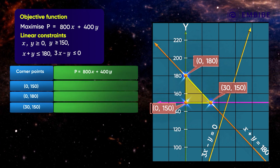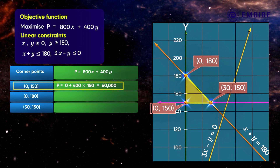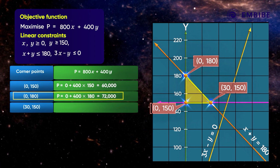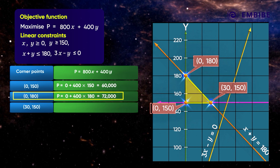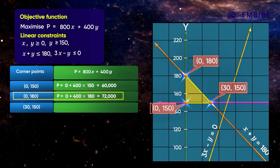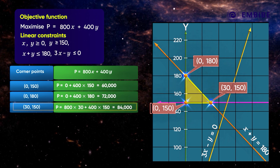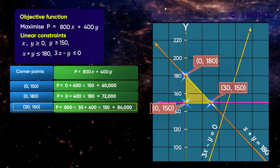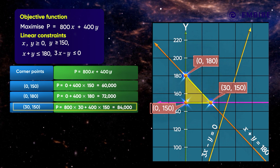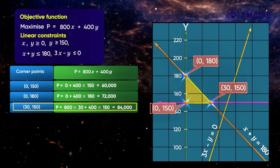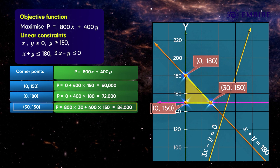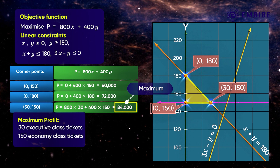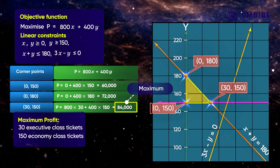When X = 0 and Y = 150, the value of P is 60,000. When X = 0 and Y = 180, the profit P would be 72,000. However, the profit is maximum when X = 30 and Y = 150, with an amount of Rs. 84,000. Therefore, the airline company can make the maximum profit by allocating 30 executive class tickets and 150 economy class tickets.